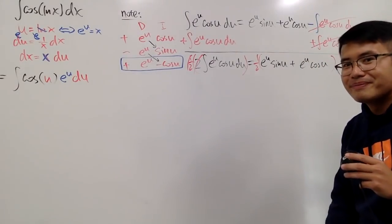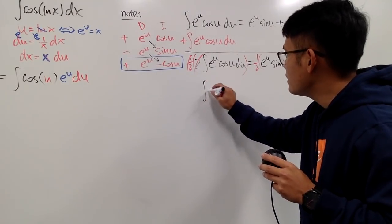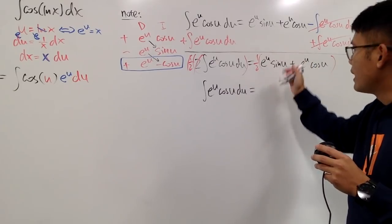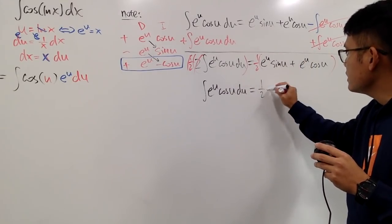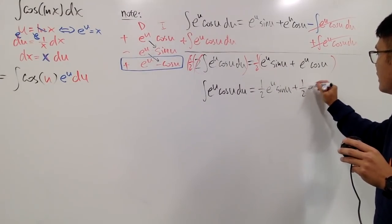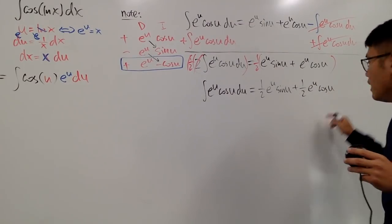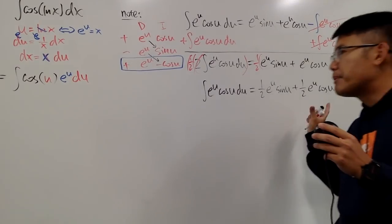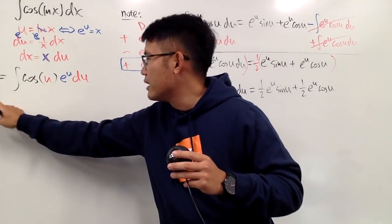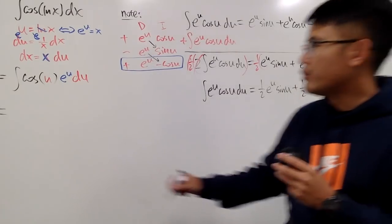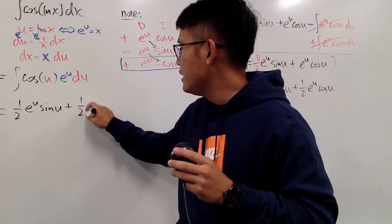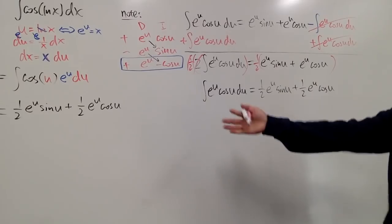Distributing the one-half, we get: the integral of e to the u cosine u du equals one-half e to the u sine u plus one-half e to the u cosine u. I'm not putting on the plus c yet because this is just the intermediate result for the u-world integral.